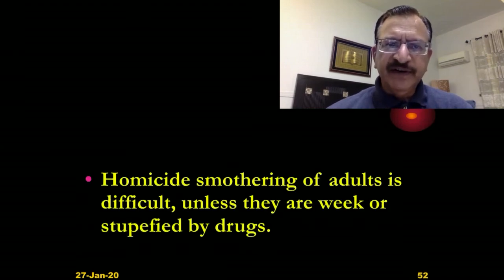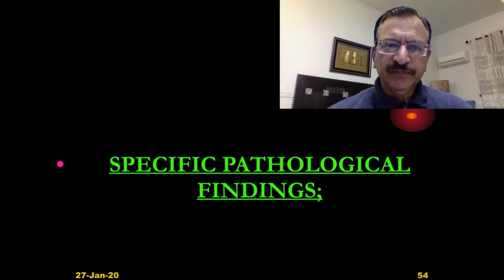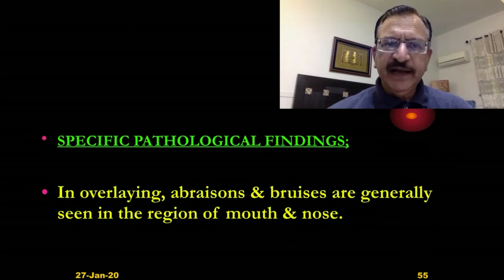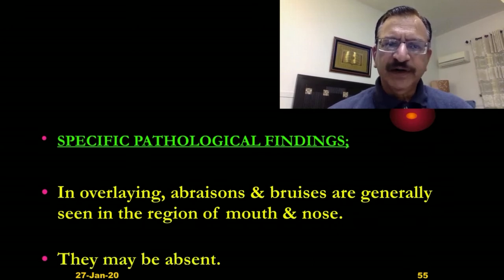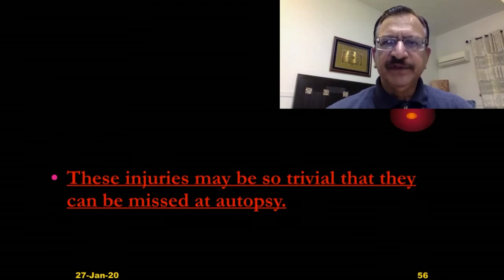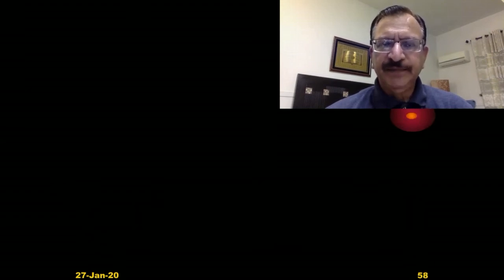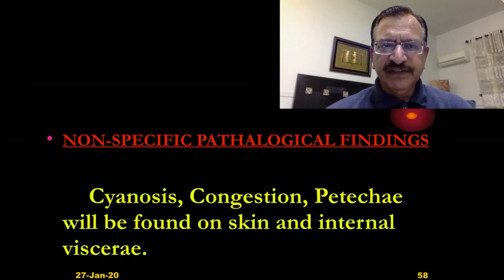Homicidal smothering of adults is difficult unless they are weak or stupefied by drugs. The specific pathological findings in overlaying: abrasion and bruises are generally seen in the region of the mouth and nose. These injuries may be so trivial that they can be missed at autopsy. The non-specific pathological findings are the same as in all asphyxial deaths — that is, cyanosis, congestion, and petechial hemorrhages, found on the skin and internal viscera.